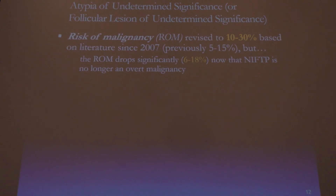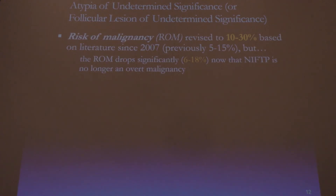For the AUS or FLUS category — again, synonymous terms, the laboratory should choose one and use it exclusively. The original risk of malignancy estimated at 5 to 15 percent was a bit of an underestimate; newer literature suggests it's more in the order of 10 to 30 percent. However, we now know that a good proportion of malignancies in this AUS/FLUS category will be reclassified as NIFTP. So although we're raising the risk to 10 to 30 percent, we're simultaneously lowering it because of the NIFTP reclassification.